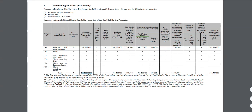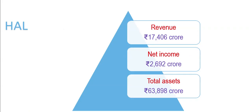This is the current shareholding pattern, where these many shares belong to the promoters and the promoter group. You can browse to the HAL website at hal-india.com to learn more about the wide range of products. The current revenue stands at 17,406 crores, net income at 2,692 crores, and total assets at around 63,898 crores.